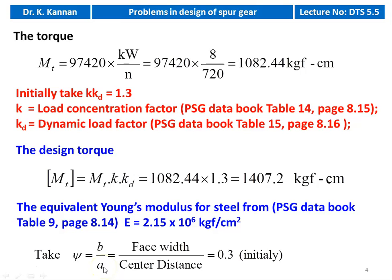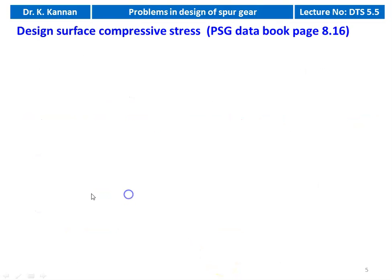Since we do not know B and A yet, we initially take B/A (psi) equal to 0.3. Now we calculate the design compressive surface stress. The equation is available on page 8.16.